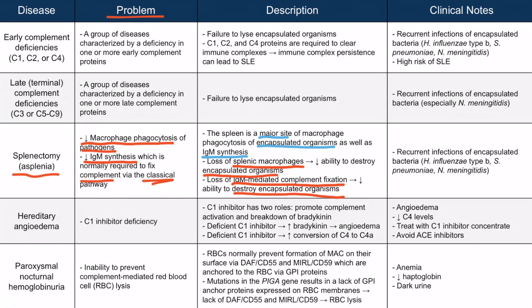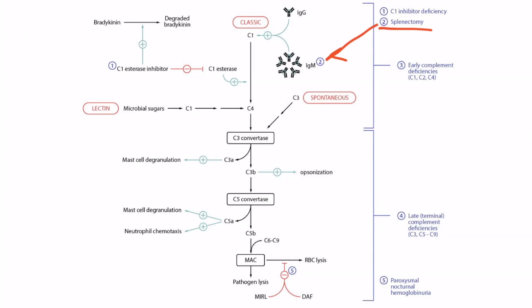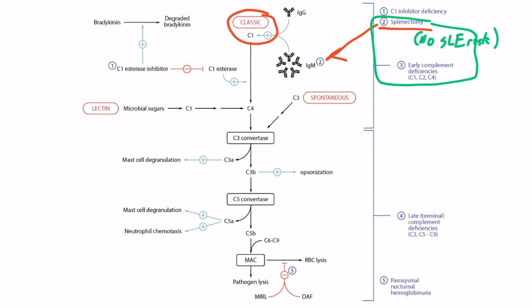These patients present with recurrent infections of encapsulated organisms such as H. flu type B, Strep pneumo, and Neisseria meningitidis — very similar to early complement deficiencies. The decreased IgM fixation leads to decreased classic pathway activation, and combined with the lack of splenic macrophages, results in infections with those same encapsulated organisms. However, patients with splenectomy don't have an increased risk of developing lupus, because they are still able to form the proteins that clear immune complexes, which patients with early complement deficiencies cannot.